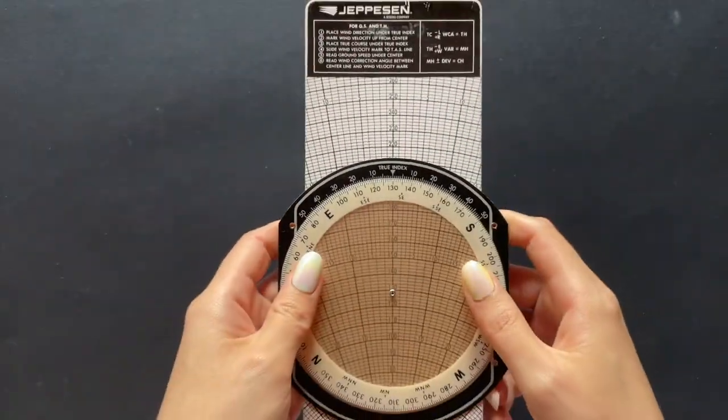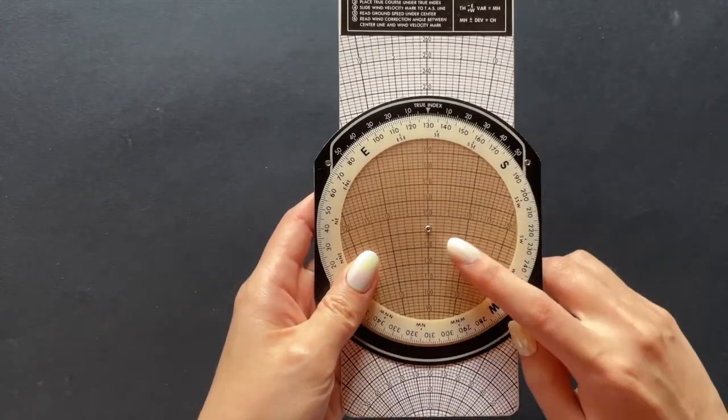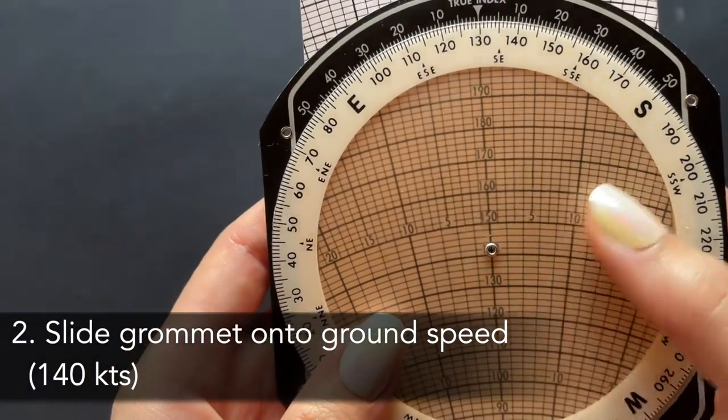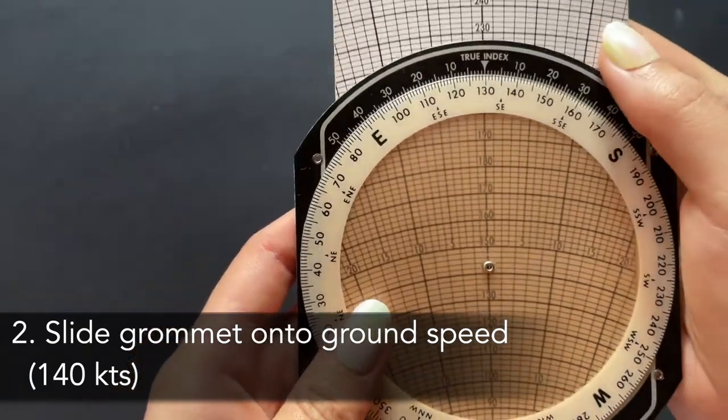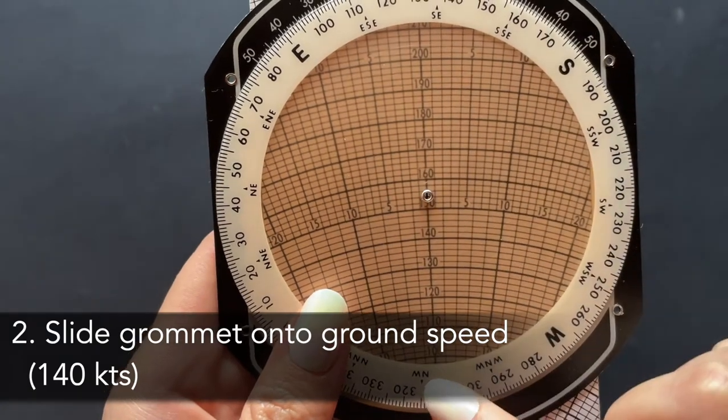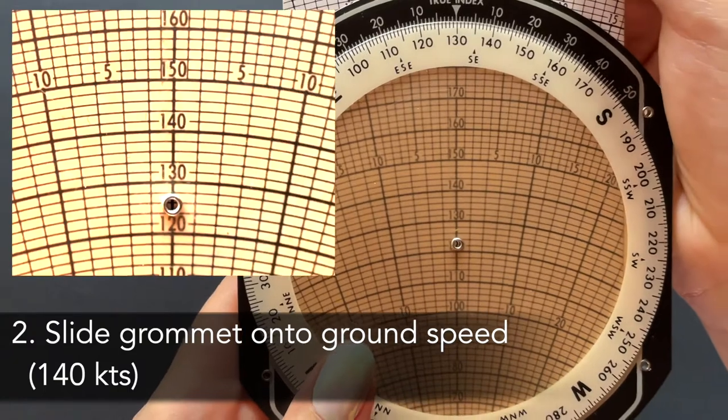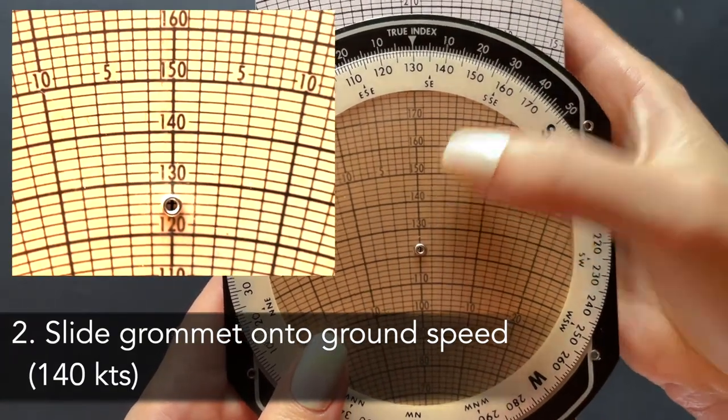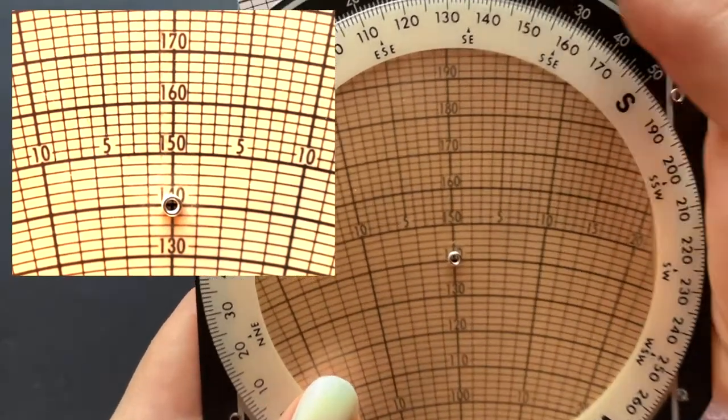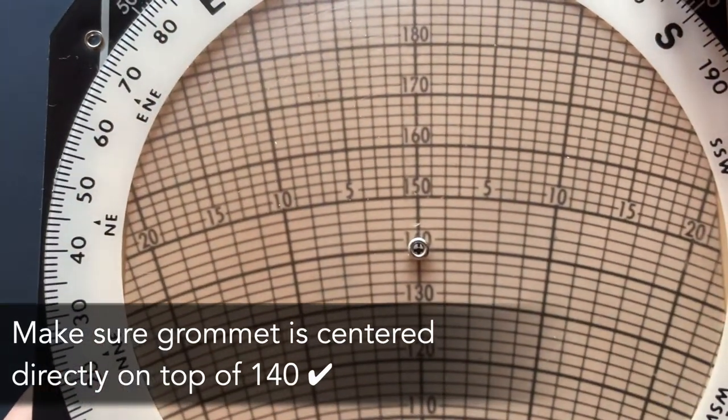Step number two, we will slide this entire piece up or down. This time, we will be paying attention to the center of the dial or that hole. You may sometimes hear this thing being called a grommet. Line up the grommet to be positioned directly on top of the appropriate number in the center line on the wind graph slide. The number we are seeking on here will be our given ground speed, in this case 140 knots. Be careful to be as precise as possible. Ideally, you'll want to peek inside that grommet and see a cross or plus sign and that way you'll know you're doing great.